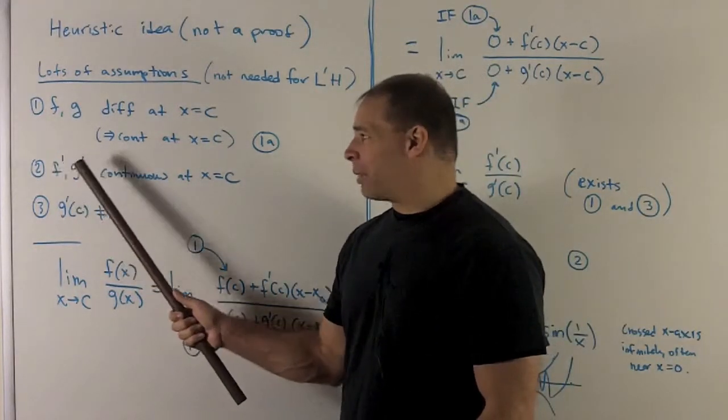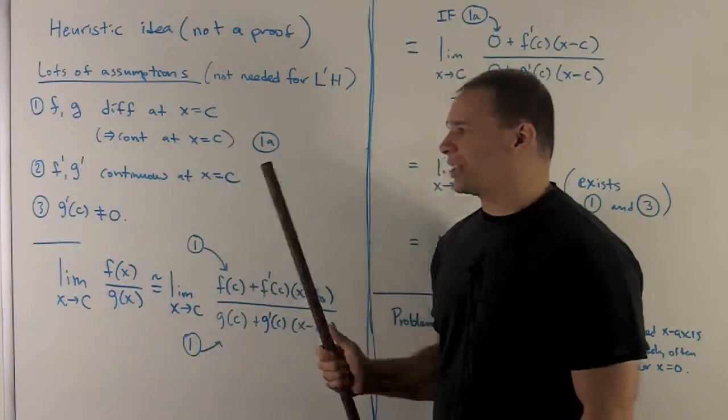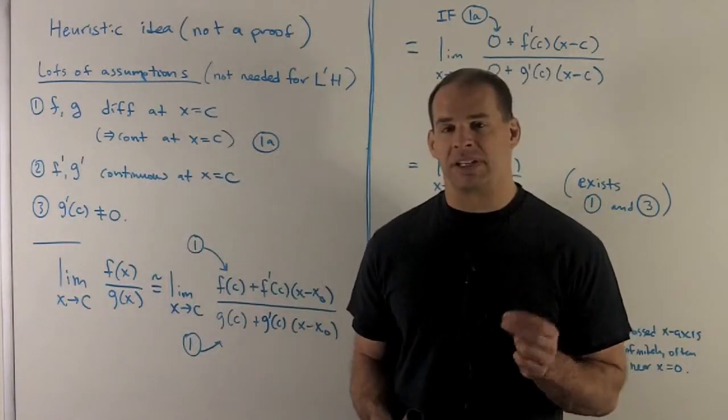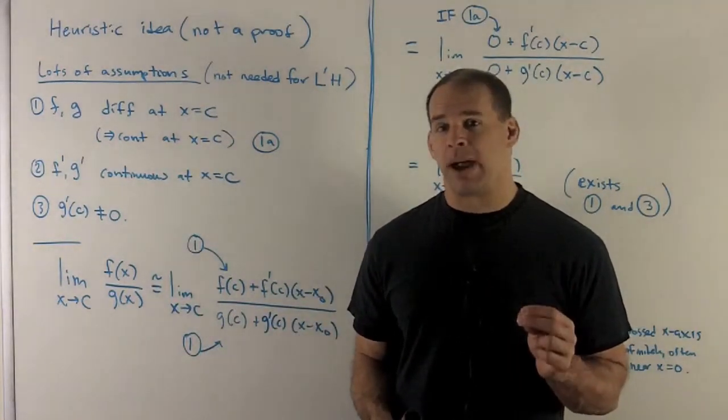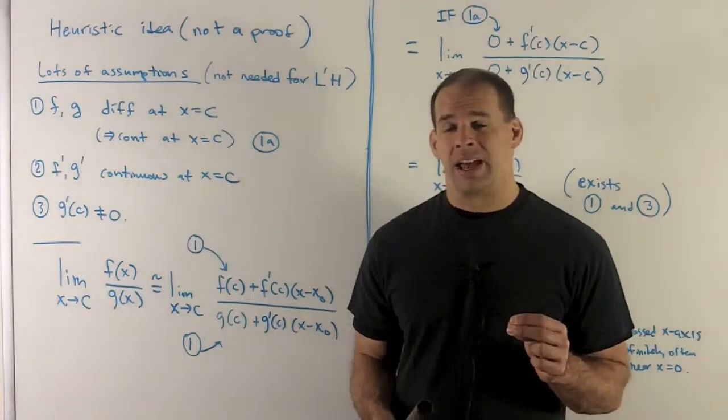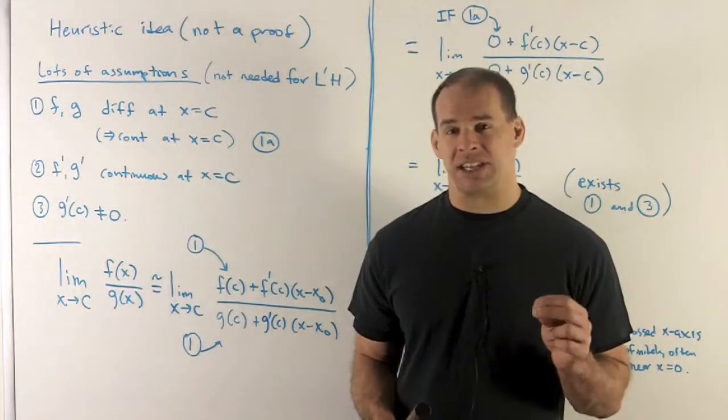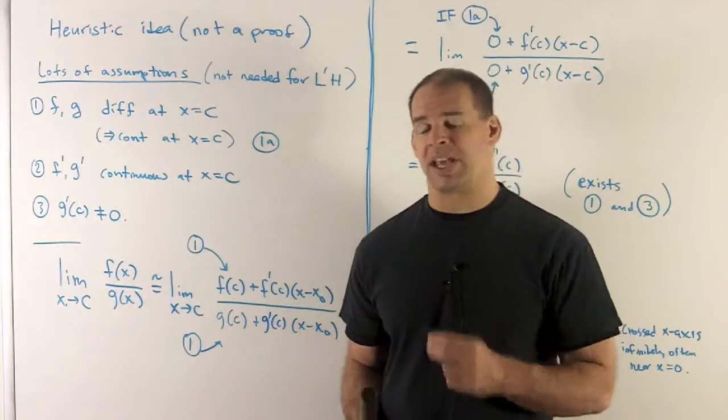Next assumption, f prime and g prime are continuous at x equals c. Again, that just means if I take the limit of f prime or g prime as x goes to c, I get the answer by just sticking c into the function, limit comes out.